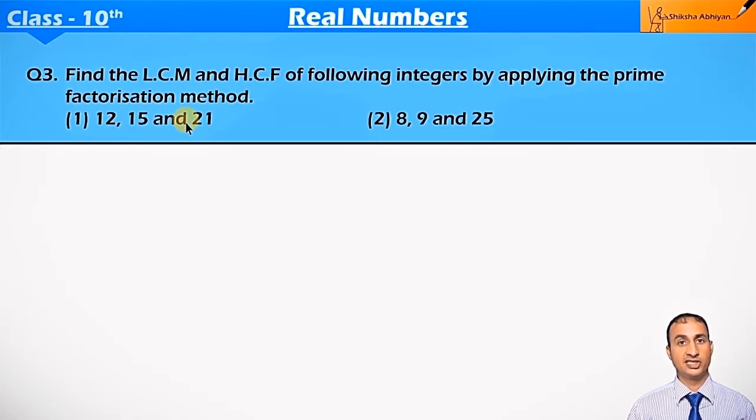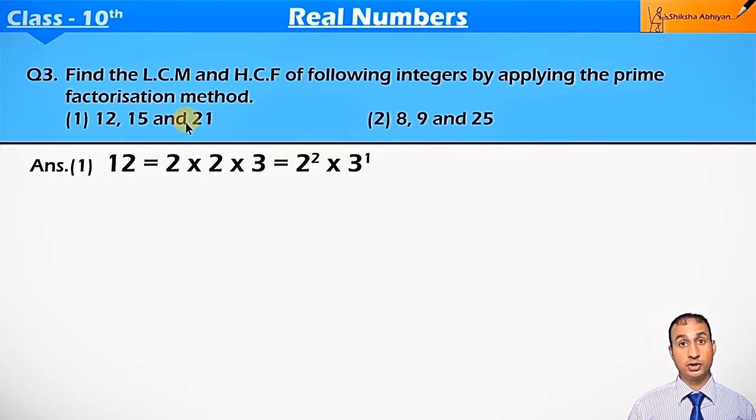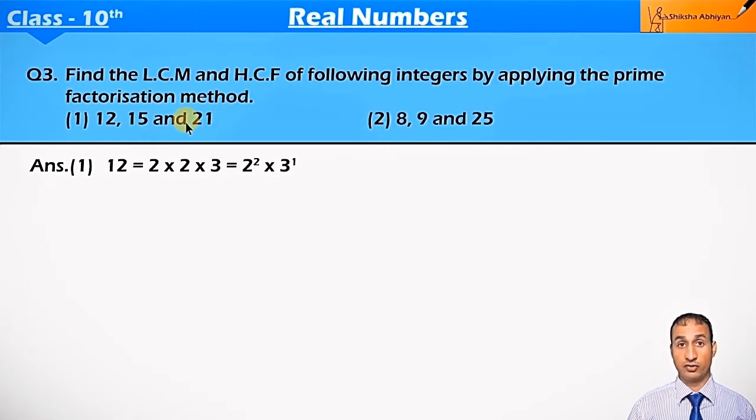So, the method remains the same for finding LCM and HCF. Now, prime factorization of 12 will be 2 × 2 × 3, that is 2² × 3¹. Prime factorization of 15 is 3 × 5, that is 3¹ × 5¹. And prime factorization of 21 is 3 × 7, that is 3¹ × 7¹.